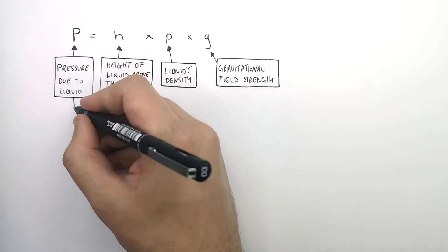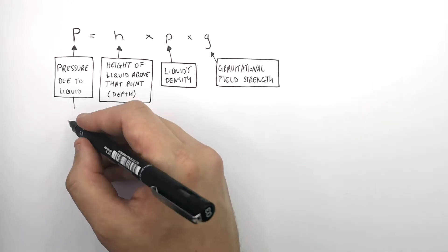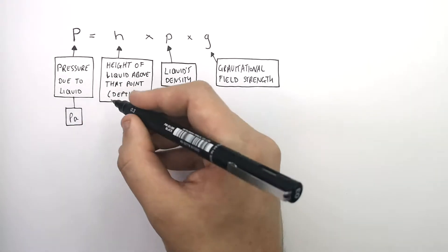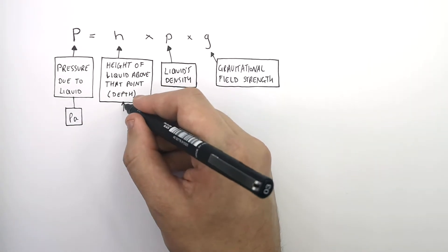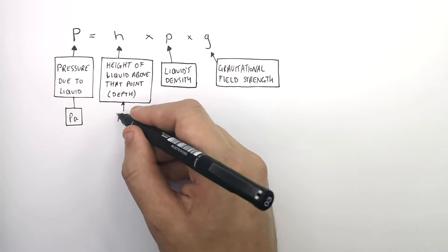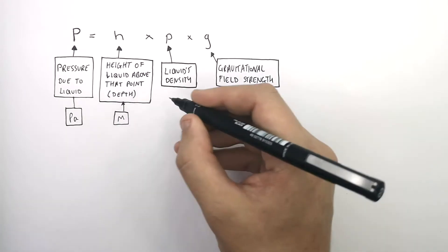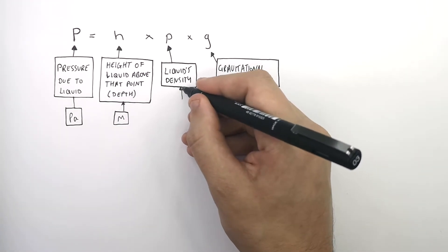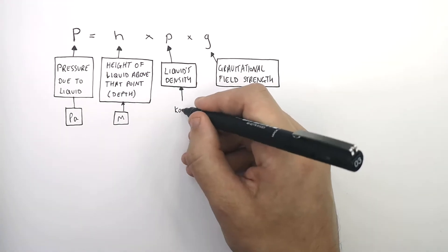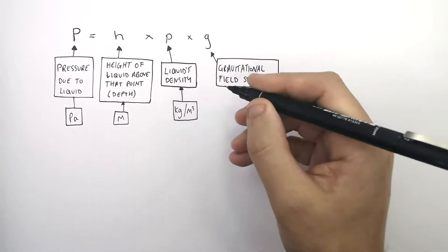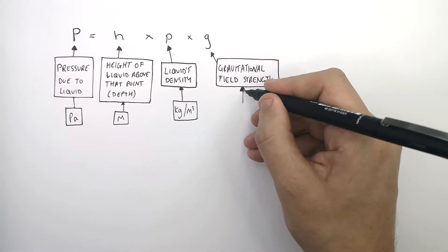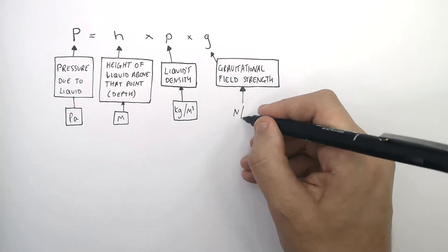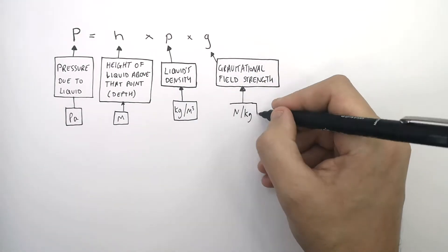The unit for pressure is Pascals — uppercase P, lowercase a. The unit for height, H, is m, metres. The unit for the liquid's density is kilograms per metres cubed. And the unit for gravitational field strength is newtons per kilogram.